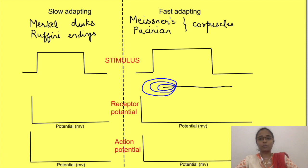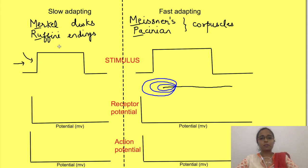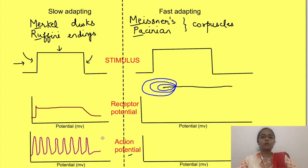Taking the example of cutaneous mechanoreceptors: Merkel's discs and Ruffini endings are slowly adapting receptors, while Meissner's corpuscles and Pacinian corpuscles are fast adapting receptors. Adaptation means decrease in the response of the receptor with time. In a slowly adapting receptor, the receptor potential will be sustained and hence action potentials will be continuously generated as long as the receptor potential is above the threshold. So they continuously tell the CNS about the presence of the stimulus. Because of this sustained response, slowly adapting receptors are also known as tonic receptors.